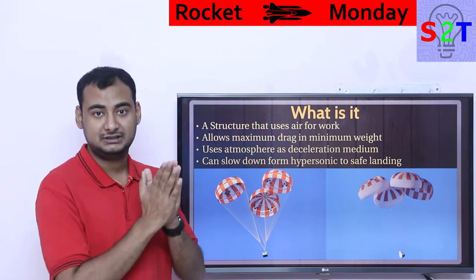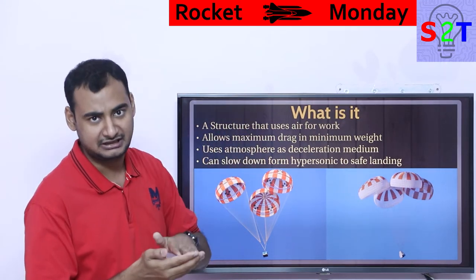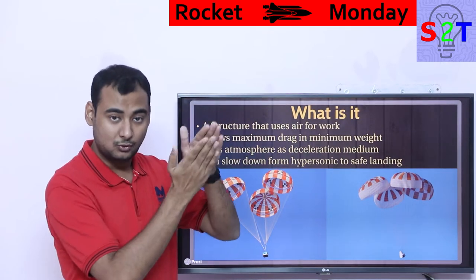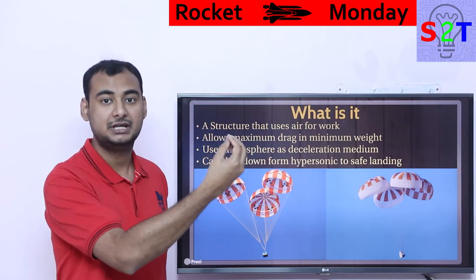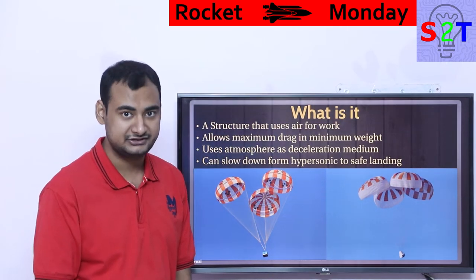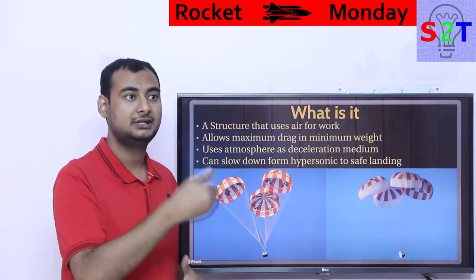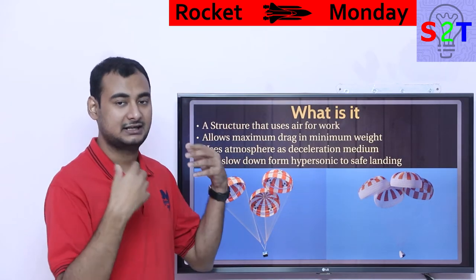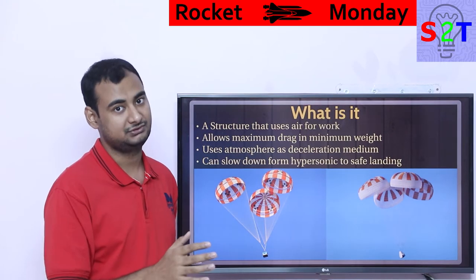The atmosphere is a thick medium — technically defined from 100 kilometers and below — and that whole region becomes an area where you can dump your energy. You put a lot of energy in to get to orbit, but since energy cannot be created nor destroyed, you have to reduce or remove that energy in order to land. So utilizing the atmosphere itself helps you do that.